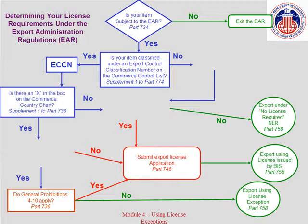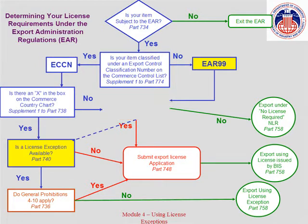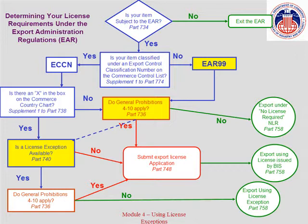In some cases, exports or re-exports of EAR-99 items may also benefit from the use of a license exception. Although EAR-99 items may be exported without a license, there are occasions when such transactions will require authorization due to General Prohibitions 4 through 10. For example, exports of EAR-99 items to Cuba must be authorized by BIS because these items are going to an embargoed destination. In these situations, you may be able to use a license exception for the required authorization. If a transaction requires a license based on General Prohibitions 4 through 10, it may still be eligible for a license exception depending on which General Prohibition applies.